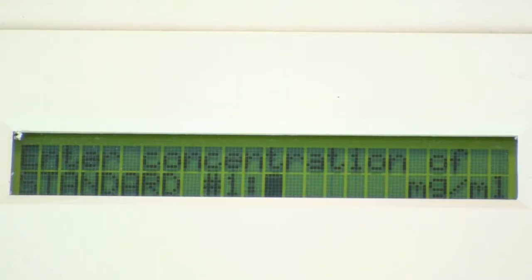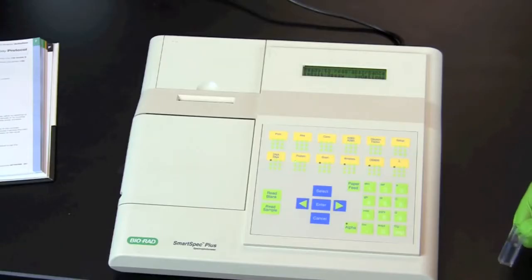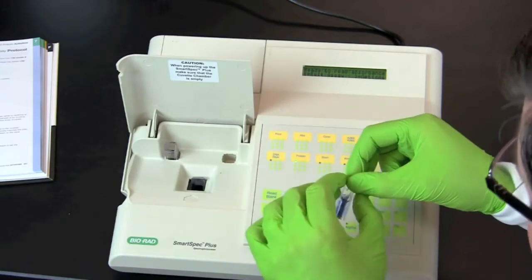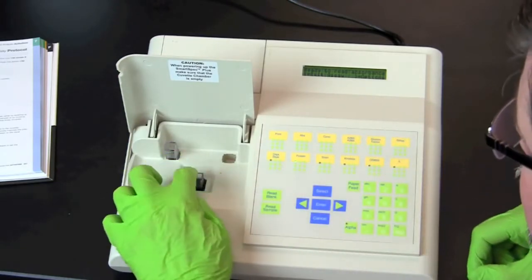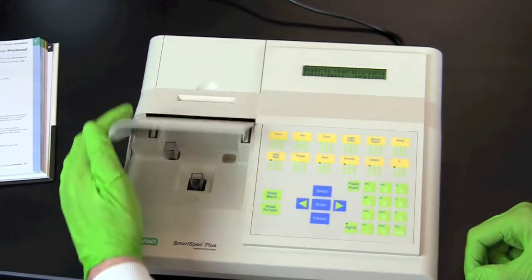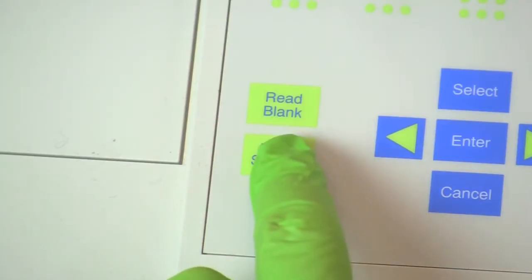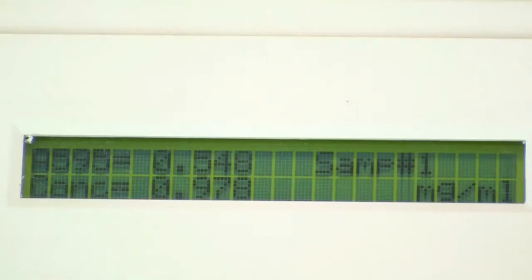If instructed, read the absorbance of the 7 protein standards and record the absorbance values. Remove the cuvette labeled blank and insert the milk sample into the spectrophotometer. Read the absorbance and record the value.